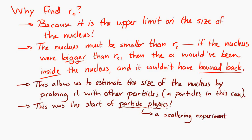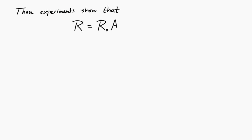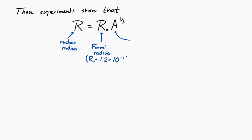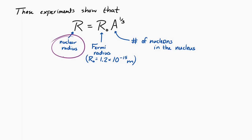If you do these experiments with alpha particles and gold nuclei and other nuclei, you find that the radius of the nucleus is given by R = R_0 · A^(1/3). Here R_0 is called the Fermi radius, a constant found by experiment equal to 1.2 × 10⁻¹⁵ meters — very, very small. A is the number of nucleons in the nucleus.